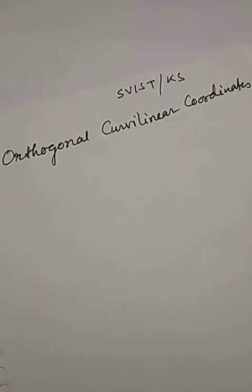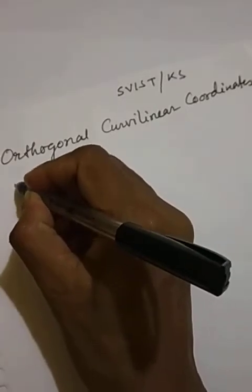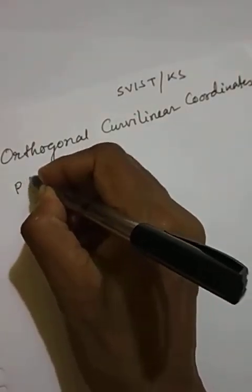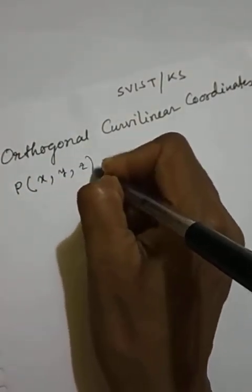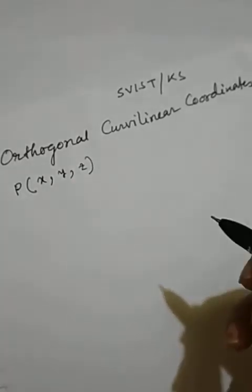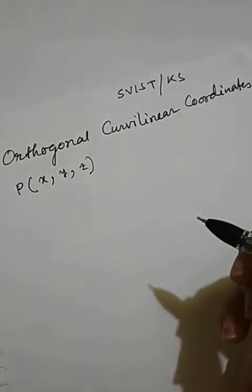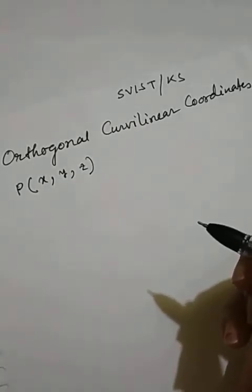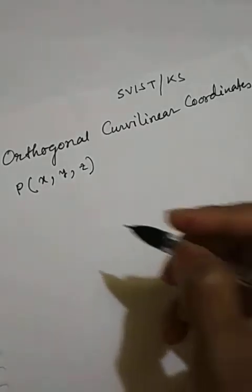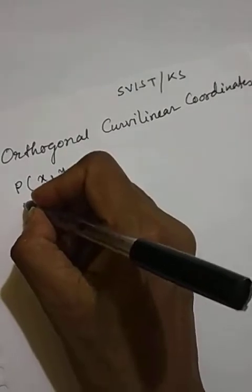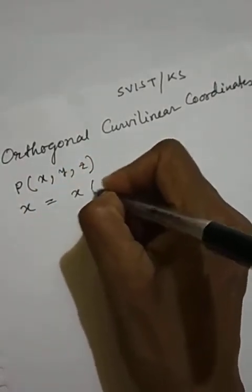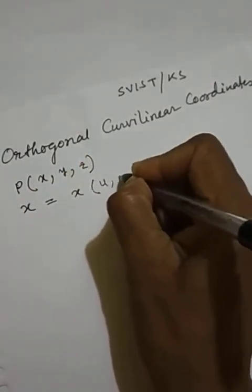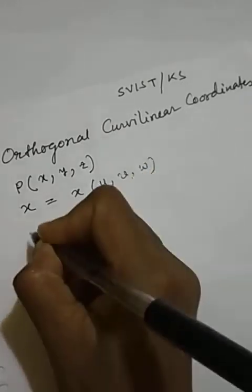Let us take a point P whose Cartesian coordinate is x, y, z. Now this Cartesian coordinate can be expressed as a function of u, v, w.